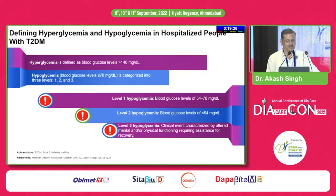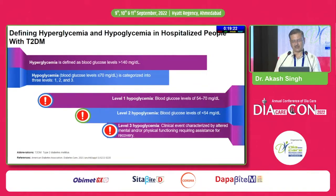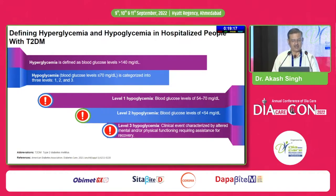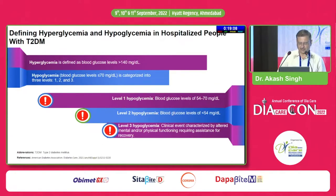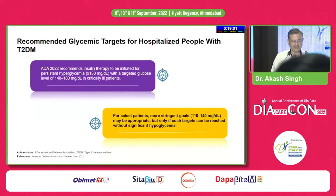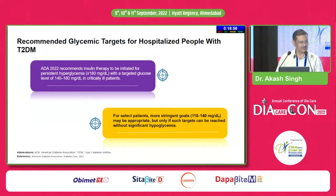Coming to hospitalized patients: any patient with sugar more than 140 should be subjected to point-of-care testing in the hospital. Hypoglycemia is defined as mild at 54 to 70 mg/dL; less than 54 is very critical hypoglycemia. If the patient requires assistance, that is a dire emergency. All hypoglycemia episodes are emergencies in hospitalized patients and we should ensure patients do not go into hypoglycemia.